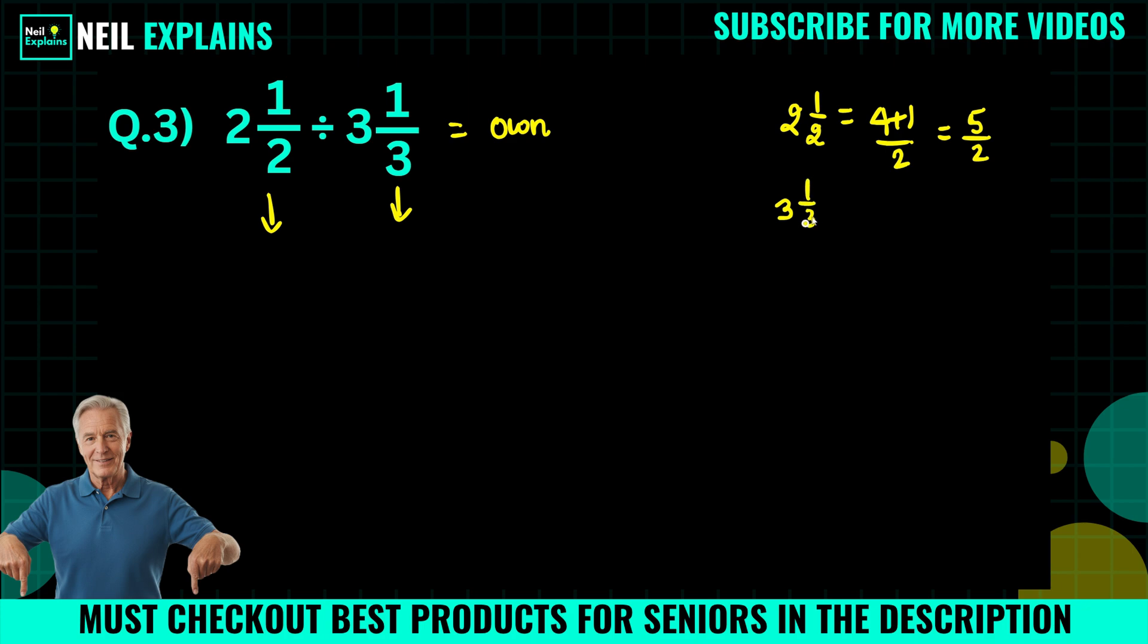Similarly, three one by three is what? Three times three plus one by three. Three times three, which is equal to nine, and nine plus one which equals to ten by three. So we can write five by two in the place of two one by two, and we can write ten by three in the place of three one by three.